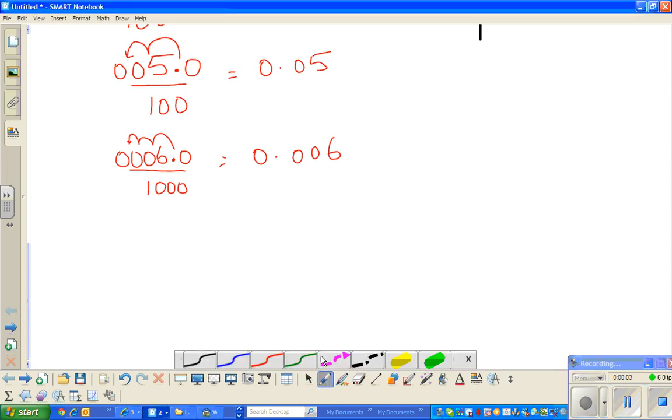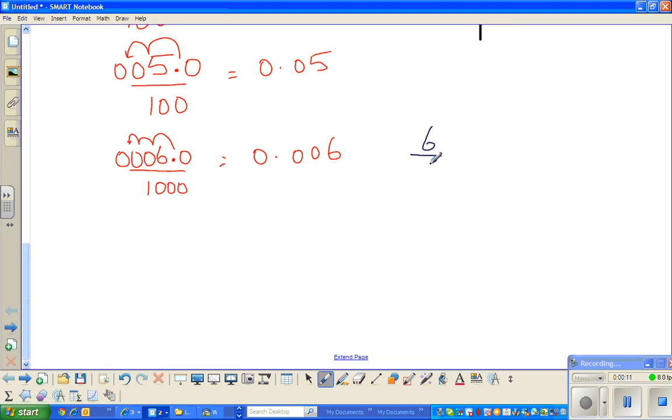Continuing from my last video where we stopped here and we said that 6 divided by 1000 gives you 0.006. So now let us focus only on hundreds. I showed this only to show you how the decimal point moves, or the number moves, whichever way you see.